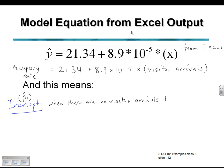X is zero, no visitor arrivals. The occupancy rate would be 21.34. Even with no visitors arriving, it still requires an occupancy rate of 21.34%.